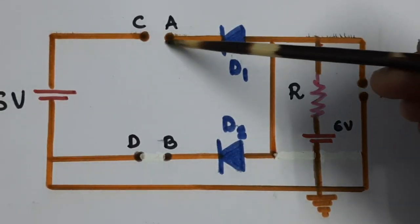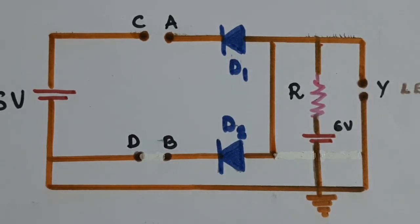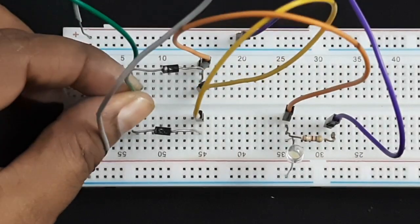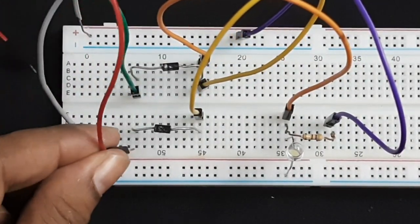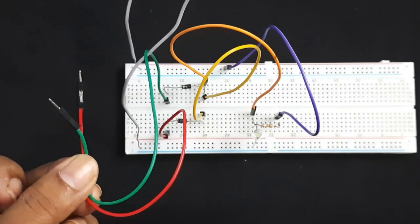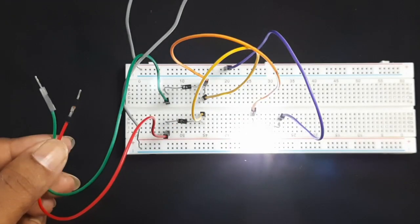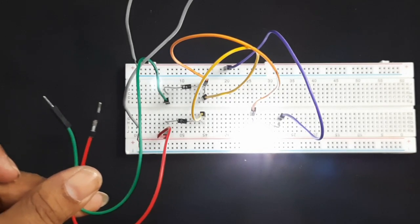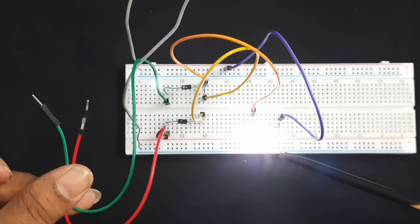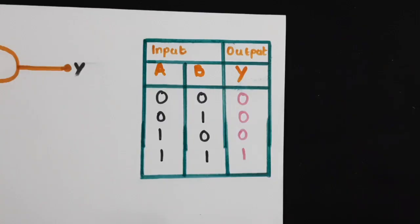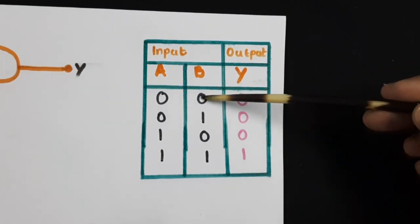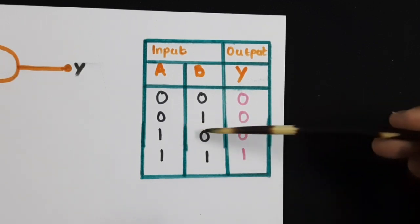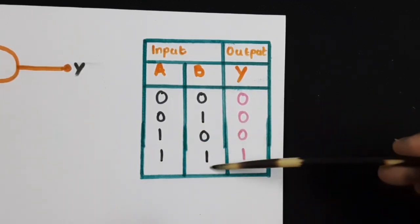Now two wires A and B have to be connected to the two diodes. For easy identification, I will use a green wire for input A and a red wire for input B. So these two are my input terminals A and B. Our first input condition will be A equals 0 and B equals 0, then A equals 0 and B equals 1, then A equals 1 and B equals 0, and then A and B both equal 1.